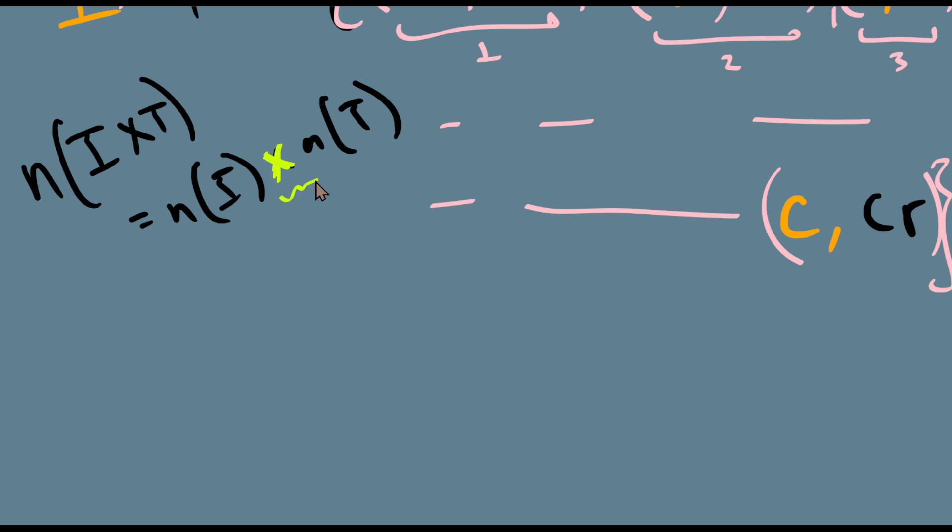And I hope this was an intuitive explanation for why this happens. So this is just the product of two numbers symbol, and this is the Cartesian product. I'm multiplying two sets together. Here I'm multiplying two numbers.